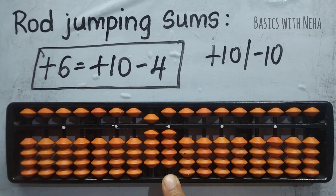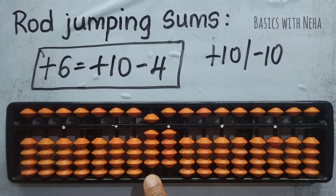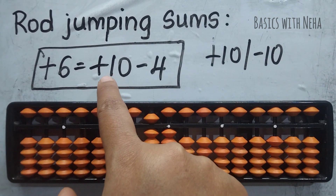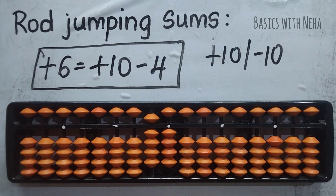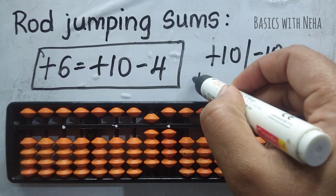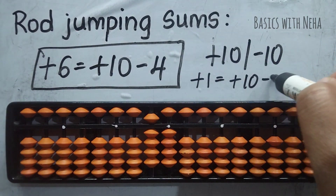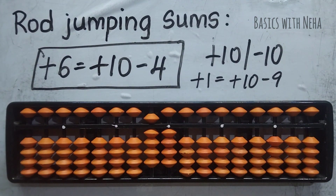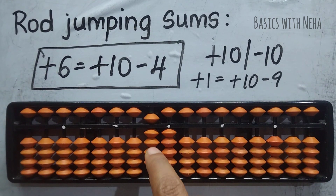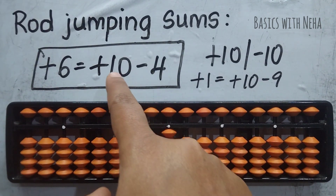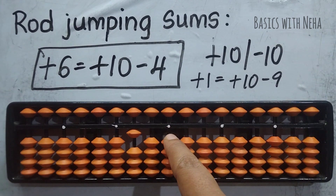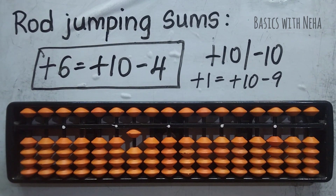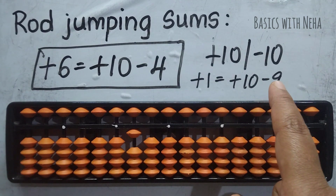To use the big friends formula it is plus 10 minus 4. To do plus 10, the beads are not available. So instead of plus 10, I am going to use the plus 1 big friend formula, which is plus 10 minus 9. So I'm going to use plus 10 minus 9, and then complete the formula minus 4. So my answer is 100. This is the formula method of doing the rod jumping sum.